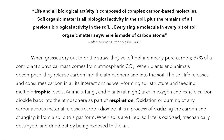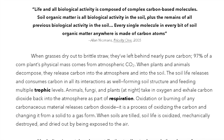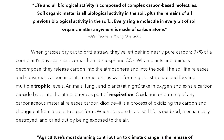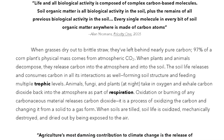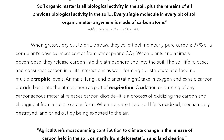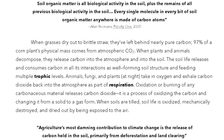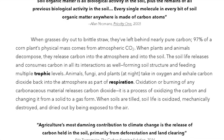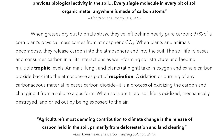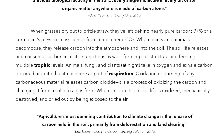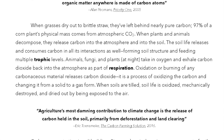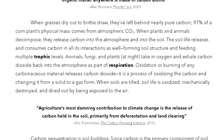That's Alan Yeomans, Priority 1, 2005. When grasses dry out to brittle straw, they've left behind nearly pure carbon. 97% of a corn plant's physical mass comes from atmospheric CO2. When plants and animals decompose, they release carbon into the atmosphere and into the soil. The soil life releases and consumes carbon in all its interactions as well, forming soil structure and feeding multi-trophic levels.